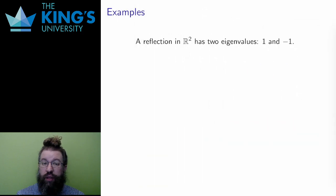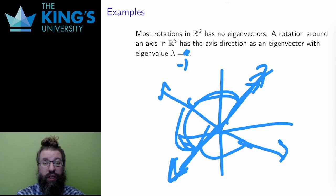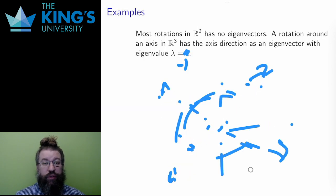In R^3, rotation happens around an axis. So again, most vectors are moved to a different direction unless the rotation is precisely half a turn. However,